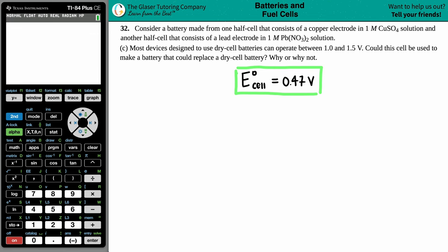Number 32, consider a battery made from one half cell that consists of a copper electrode in one molar CuSO4 solution and another half cell that consists of a lead electrode in one molar Pb(NO3)2 solution. So now we have letter C. They say most devices designed to use dry cell batteries can operate between one and 1.5 volts. Could this cell be used to make a battery that could replace a dry cell battery? Why or why not?